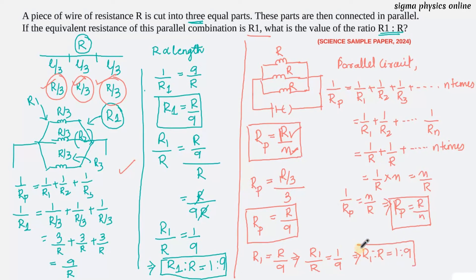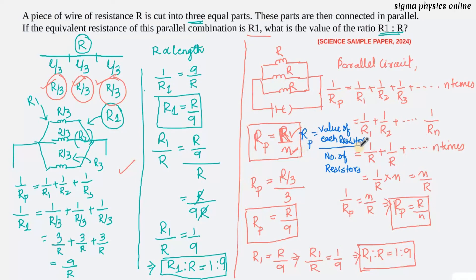To summarize: the equivalent resistance in parallel for equal resistors is given by the value of each resistor divided by the number of resistors. You can use this formula to solve such questions easily. I hope you've understood this formula and the solution to this question. If you found this video helpful, please like, share it with your friends, and subscribe to the channel. Thanks for watching. Bye.